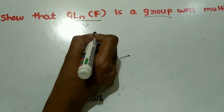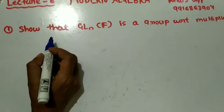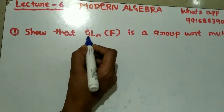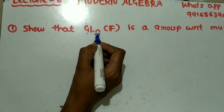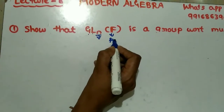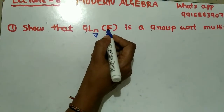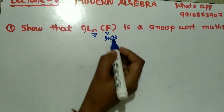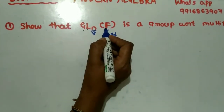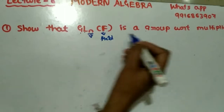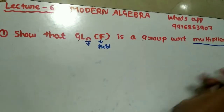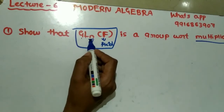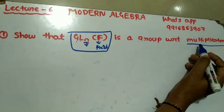GL(N,F) stands for General Linear. Let me read the question first: Show that GL(N,F) is a group with respect to multiplication. Here, N denotes the order of the matrix, and F denotes the field — which may be finite or infinite. The non-empty set is the General Linear group of order N over the field F, and the binary operation is matrix multiplication.